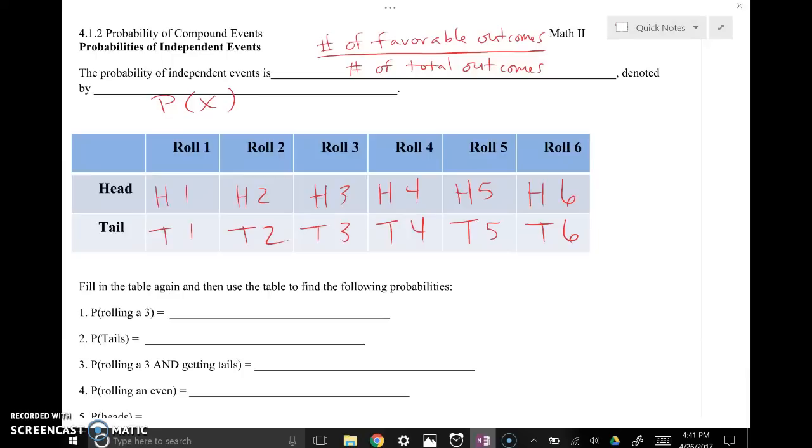the maximum chance of something happening, the maximum probability is 100% or 1, and the minimum probability would be 0% or 0. So I've got some information here. If you want to pause your screen, fill in your chart again, and write down our definition and notation for probability of an independent event.